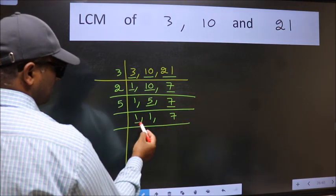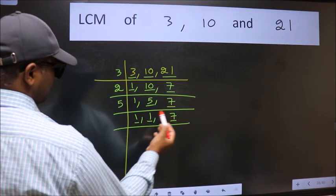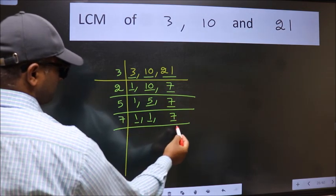Now we got 1 here and here, so focus on the next number 7. 7 is a prime number, so 7 once is 7.